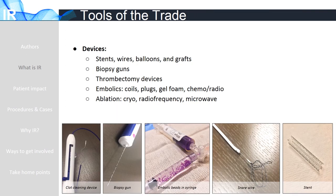The devices discussed in the slide are just a preview of the tools used in IR. Balloons, stents, grafts, and thrombectomy devices can be used to open up narrowed or blocked vessels. Biopsy devices can be used to take samples of potential tumors. Meanwhile, embolic materials such as coils, plugs, and beads can be used to block blood flow in cases like bleeding. Some beads can be mixed with radioactive material or chemotherapy drugs to treat cancer. Or, we can use special needles to burn or freeze tumors as well. These devices offer a glimpse into the large array of tools IRs use daily, while the market for innovation, creativity, and development of these devices continues to expand rapidly.